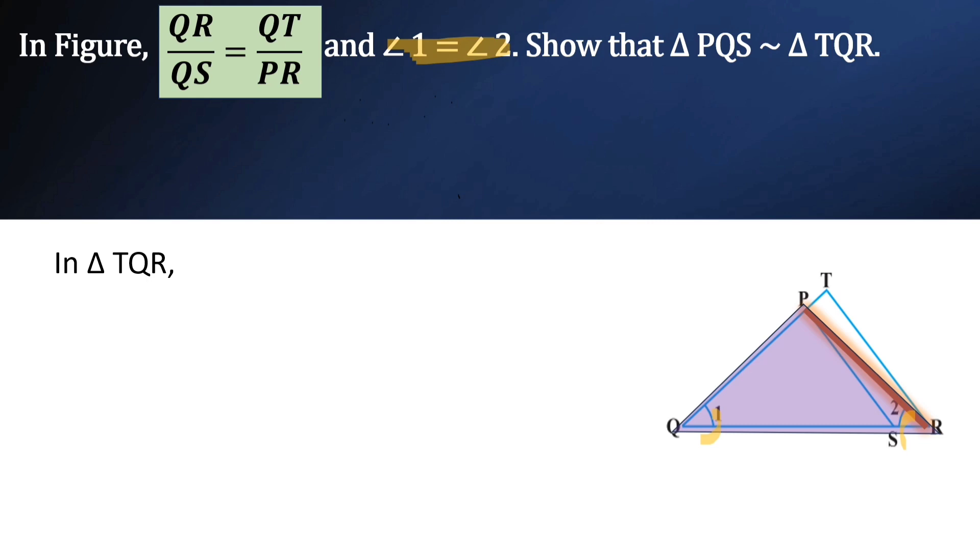So now let us use the property of triangles that the sides opposite to equal angles are equal. So PR is equal to PQ.